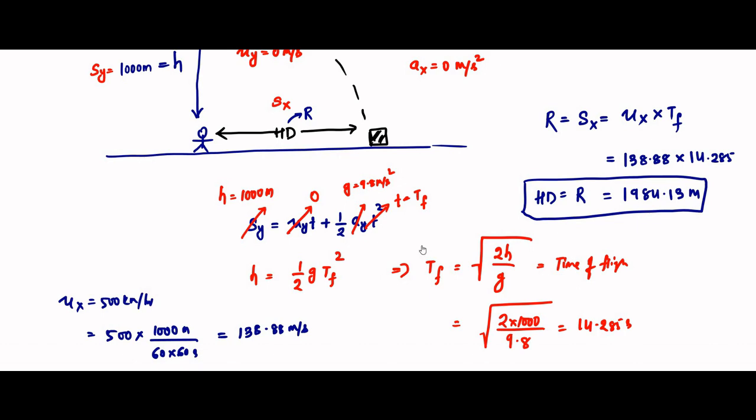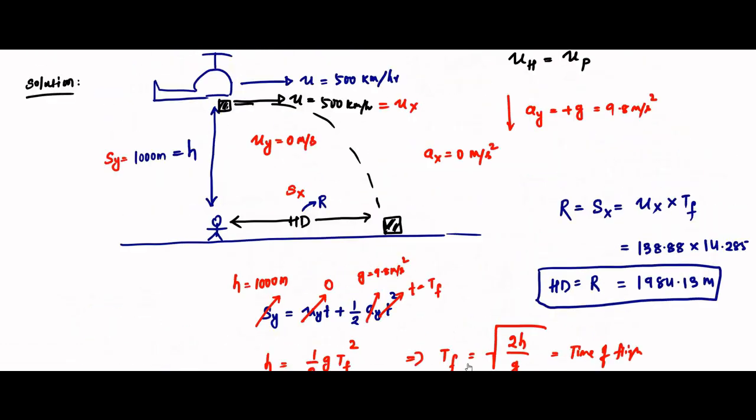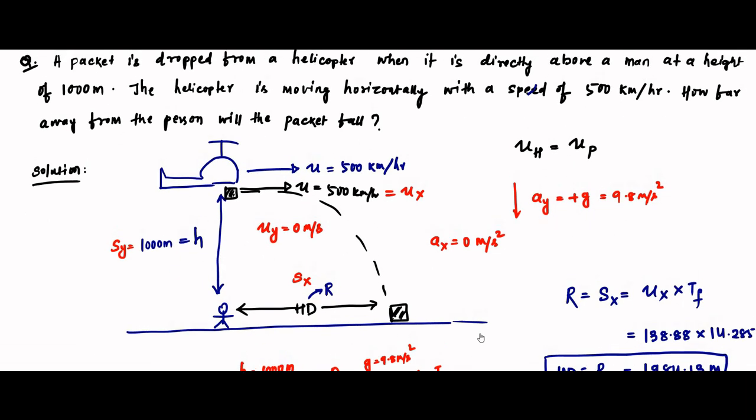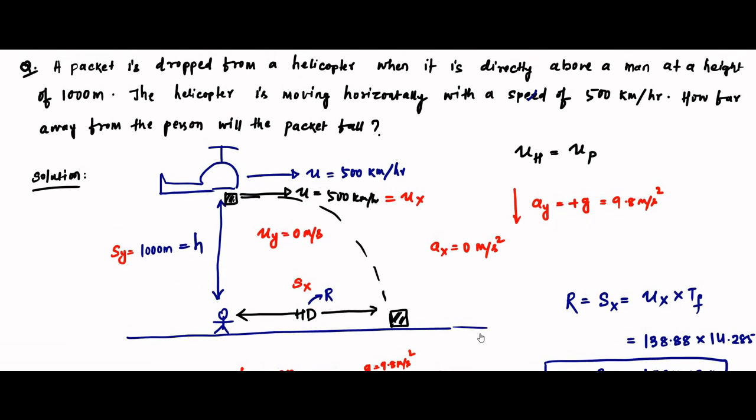This is the basic solution. All you have to do is understand the application of equations of motion and the principle of independence of motion in projectile motion — split the whole situation into two parts: y-axis analysis separate and x-axis analysis separate. Every vector parameter — velocity, acceleration, displacement — will have two separate components x and y, where x components apply for x and y components apply for y.